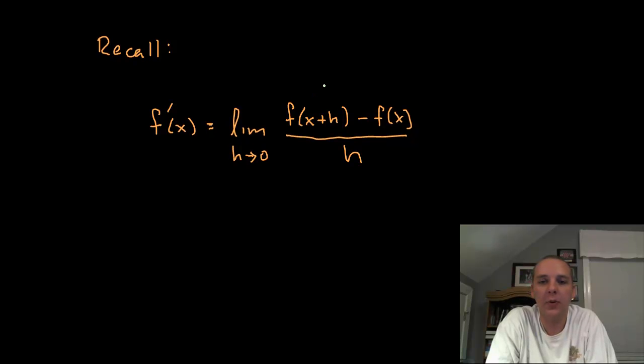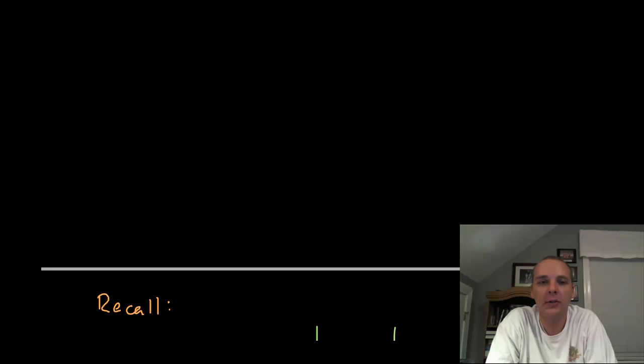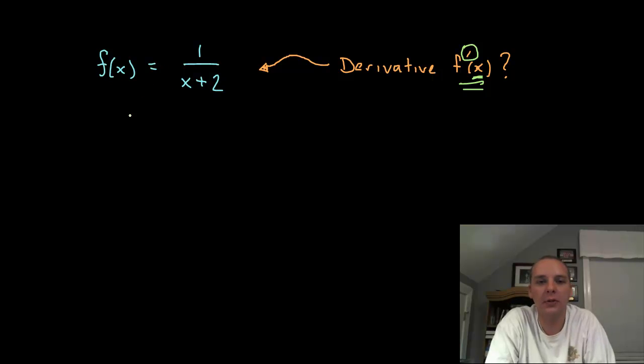So here we go. I need two quantities here: I need f of x plus h and I need f of x all divided by h. So here's f of x, it's 1 over x plus 2. I also need f of x plus h, so let me go ahead and find that right now. This will be 1 over not x plus 2, but x plus h plus 2.